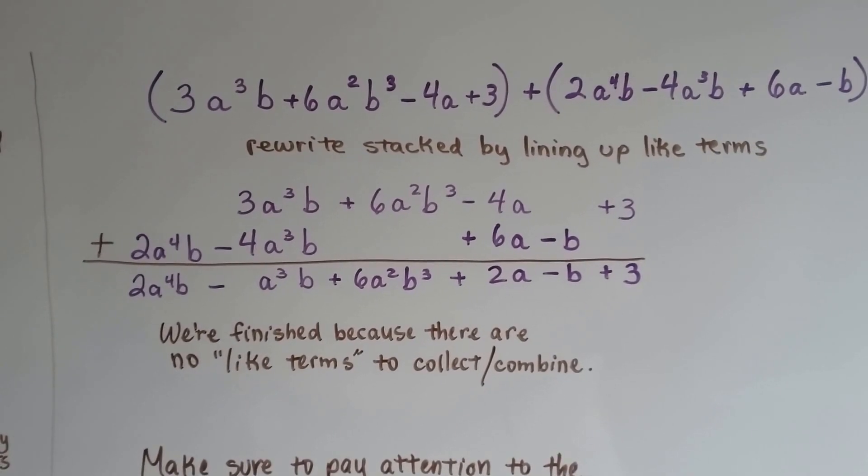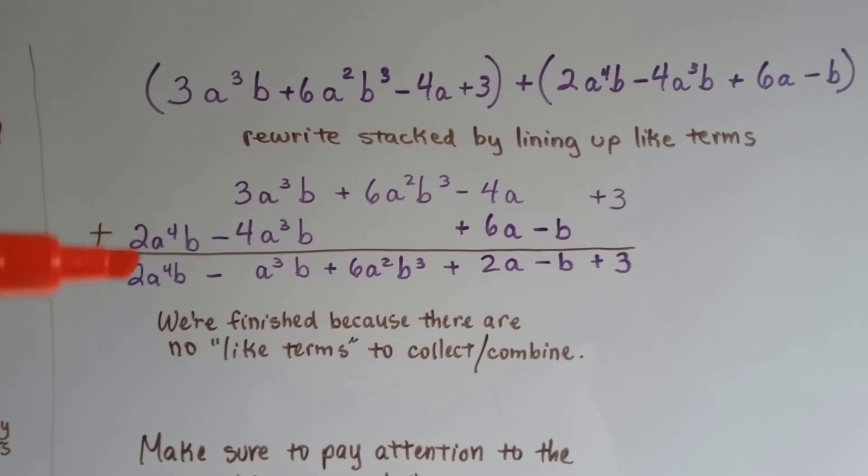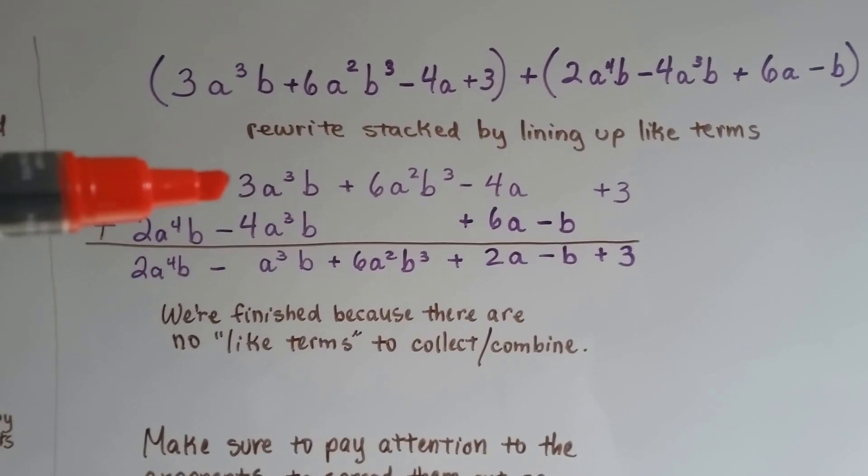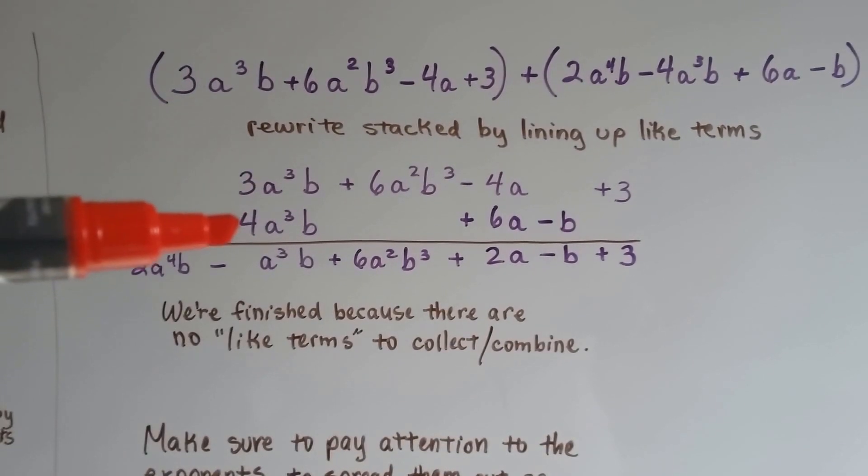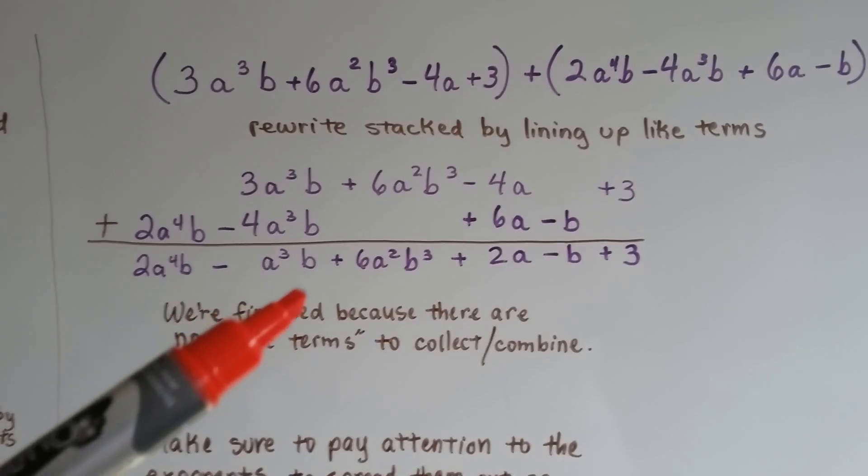We rewrite them stacked up, lining up the terms. So now we've dropped down this 2a to the fourth power b. 3a to the third power b minus 4a to the third power b is a negative 1. We don't write the 1, so we just got a to the third power b.